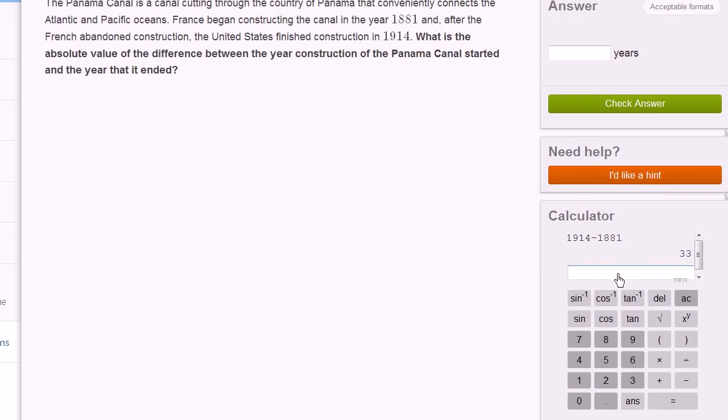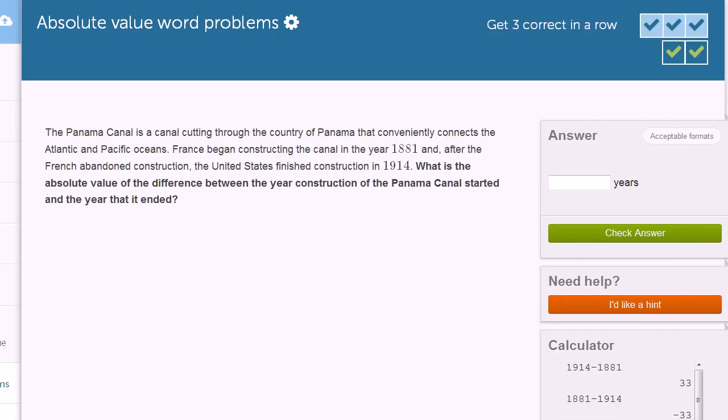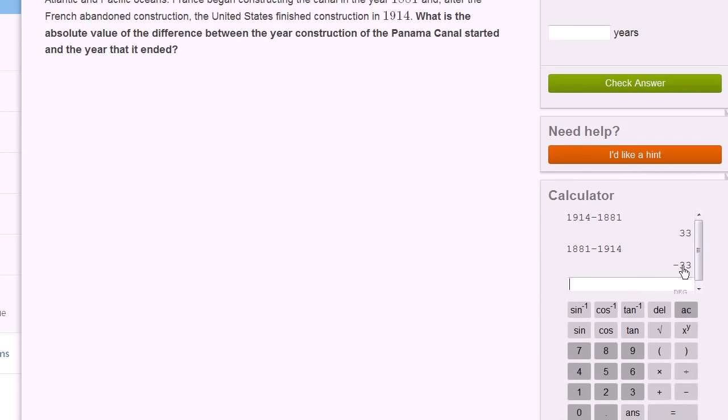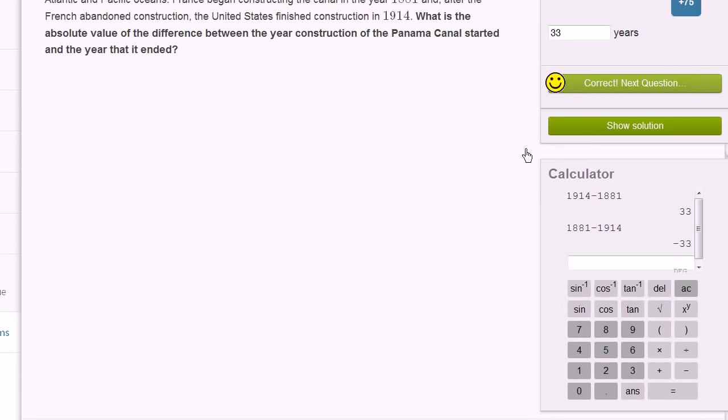Or you could have done it the other way around. Since we're taking absolute value, it doesn't matter what we subtract from the other. You could have gone 1881 minus 1914. And you would have gotten negative 33. But the absolute value of either of these numbers is, you're saying, how far is 33 or negative 33 from zero? Well, they're both 33 away from zero. Or you could say, well, what's the positive version of either of these? Well, it's 33. So the absolute value of the difference in the years is 33 years. And we're done.